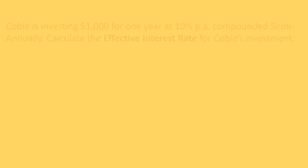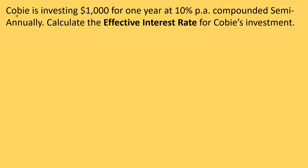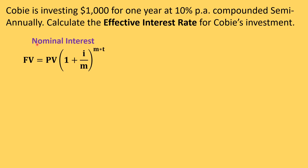In this example, Kobe is investing one thousand dollars for one year at ten percent per annum compounded semi-annually. We need to calculate the effective interest rate for Kobe's investment. Before we begin, we know this is a future value question — we already have the information to find the value of the investment at the end of one year.